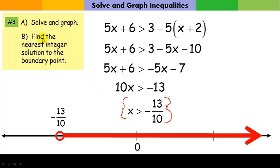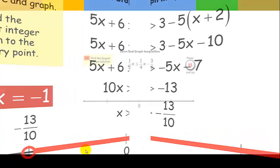Now, what we want to know is find the nearest integer solution. So, this is written as an improper fraction. I could just as easily write that as negative 1 and 3 tenths. So, that's -1.3. So, think about which integers are on both sides of it. Well, there's integers on both sides of it because it's in between. So, what is this integer over here? Negative 2. What's this one? Negative 1. And so, the nearest integer solution to the boundary is negative 1.